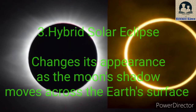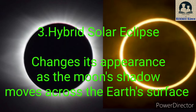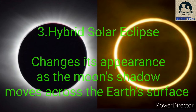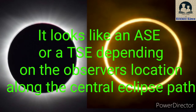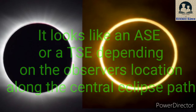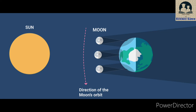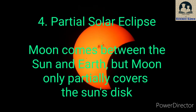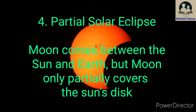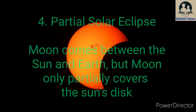A hybrid solar eclipse is a rare type of solar eclipse that changes its appearance as the moon's shadow moves across the earth's surface. It looks like an annular solar eclipse or total solar eclipse depending on the observer's location along the central eclipse path. During a hybrid solar eclipse, the earth's curvature brings some sections of the eclipse path into the moon's Umbra, the darkest part of its shadow, creating a total solar eclipse, while other areas remain outside the Umbra's reach, causing an annular eclipse. A partial solar eclipse happens when the moon comes between the sun and the earth but the moon only partially covers the sun's disk.